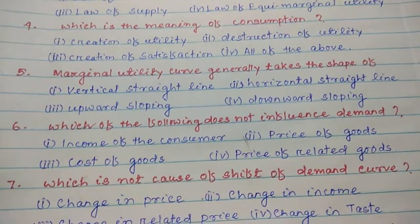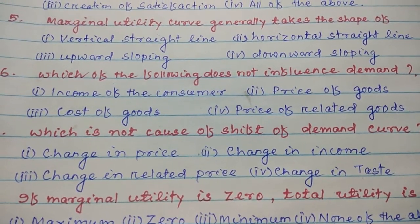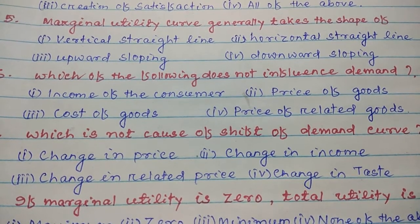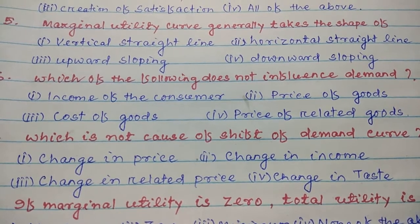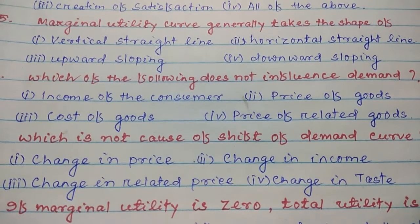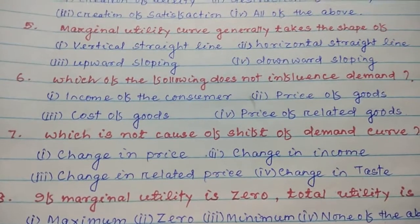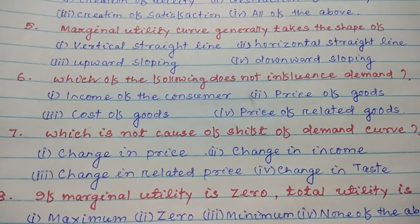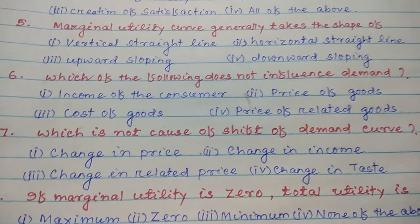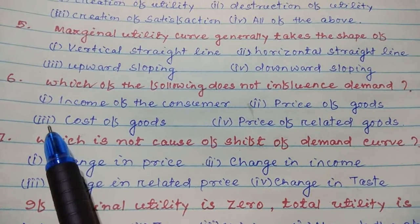Number six: Which of the following does not influence demand? I. Income of the consumer, II. Price of goods, III. Cost of goods, IV. Price of related goods. The factors which influence demand are income of the consumer, price of goods, price of related goods, etc. — but not cost of goods. So the answer for number six is III. Cost of goods.